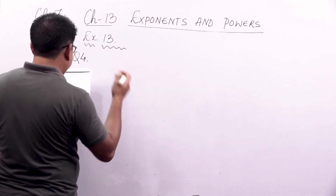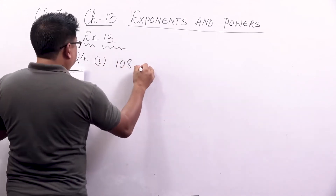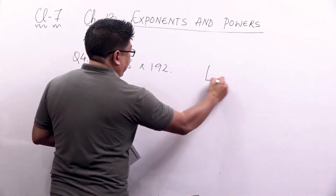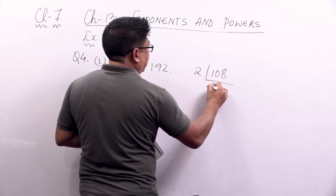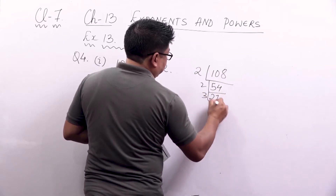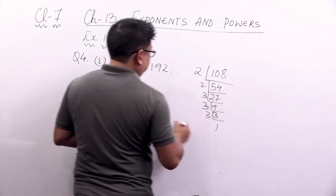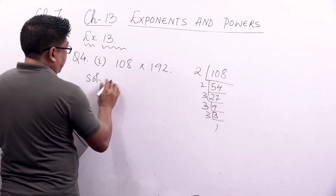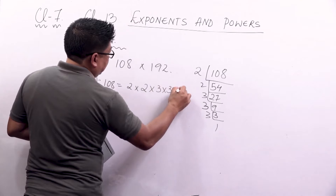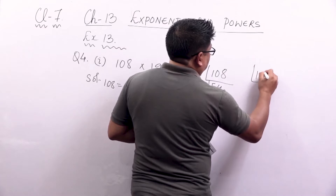Express each of the following as a product of prime numbers only in exponential form. I will be doing one or two questions here. For 108, we find the prime factorization: 108 can be written as 2 into 2 into 2 into 3 into 3 into 3. And for 192, we similarly find the prime factorization.